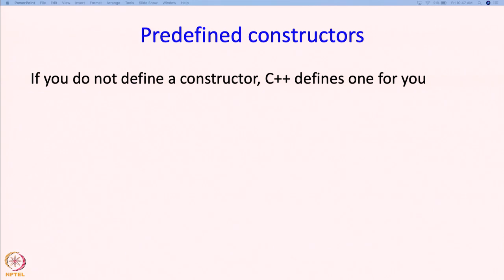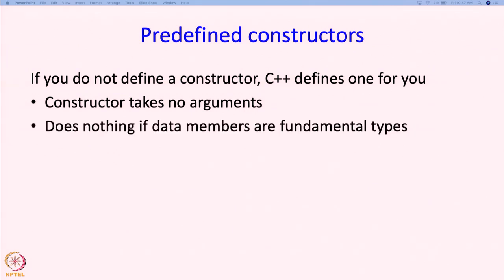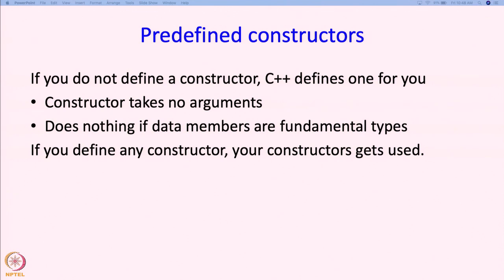Predefined constructors are always there if you do not define a constructor. This constructor takes no arguments and does nothing — if the data members are fundamental types, it really does nothing. Whenever you defined a struct earlier and wrote something like struct p, this predefined constructor was being called to construct that object. If you define any constructor — with or without arguments — then your constructors will be used and the predefined constructor will not.